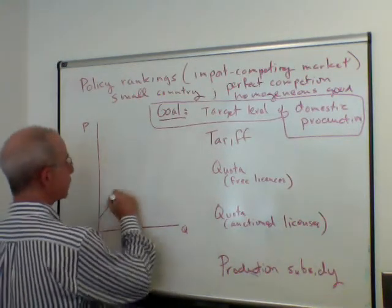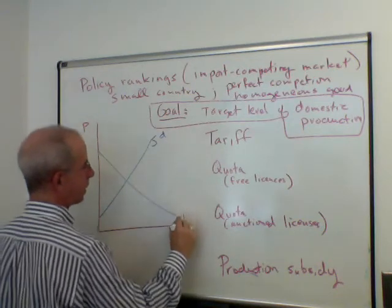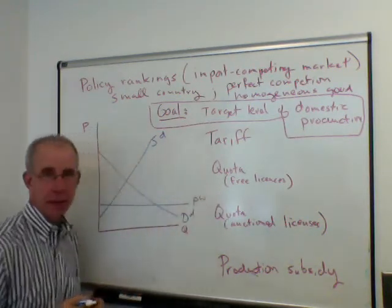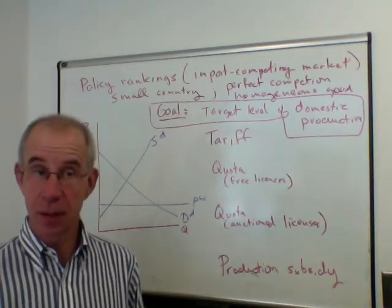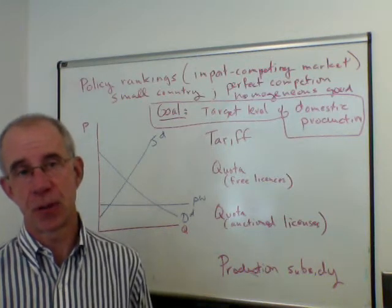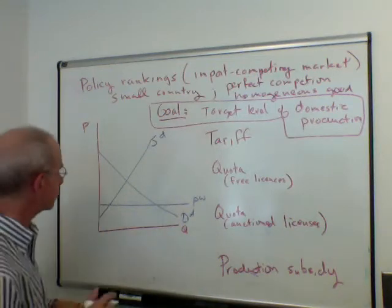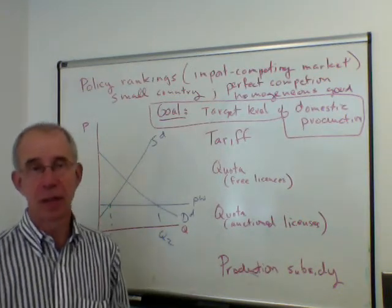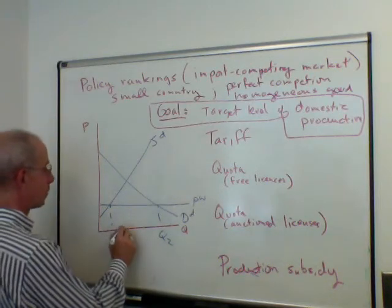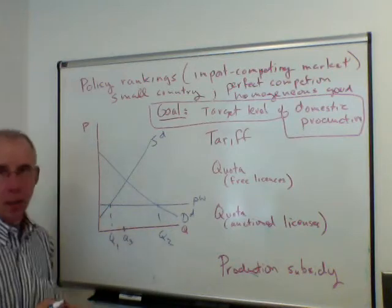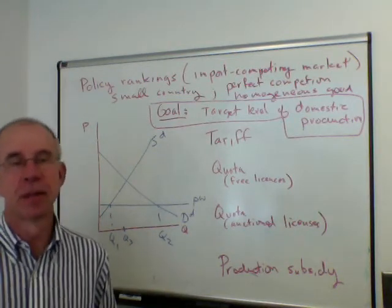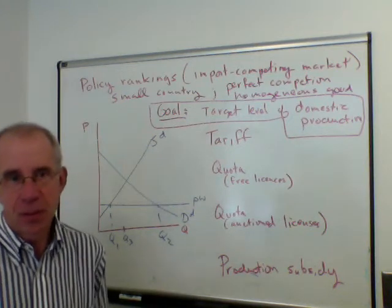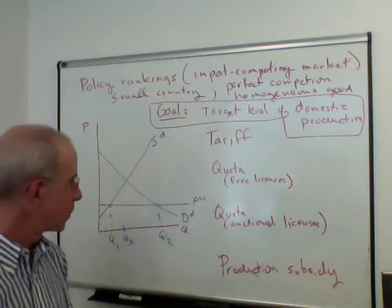So we have the standard story of domestic supply and domestic demand, and we will have a perfectly elastic world supply curve so that the product can be purchased on the international market in any amount this country might want. Q1 to Q2 are the imports under free trade, and we're trying to reach quantity Q3 — that's the amount of domestic production all of these instruments are supposed to achieve. That could be associated with an increase in domestic employment, but let's focus strictly on the production side.